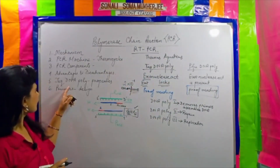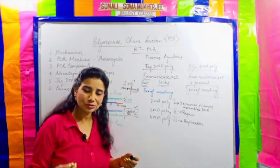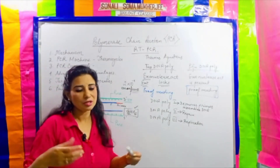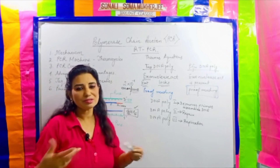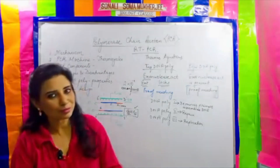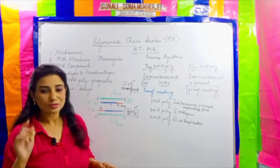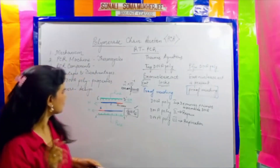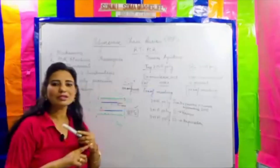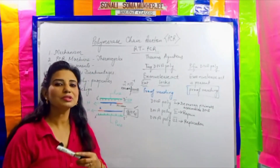For primer designing, self-complementarity should be avoided so that sequences do not match with their own cells, causing primers to bind with each other and form dimers or hairpin-like loops.